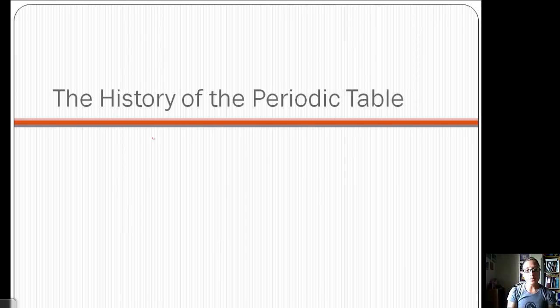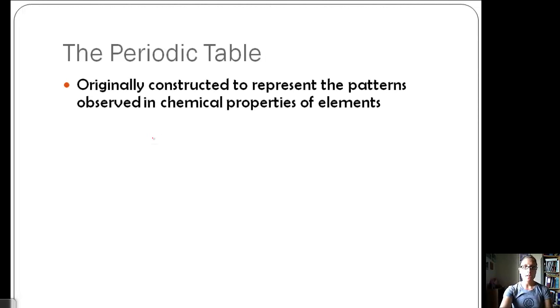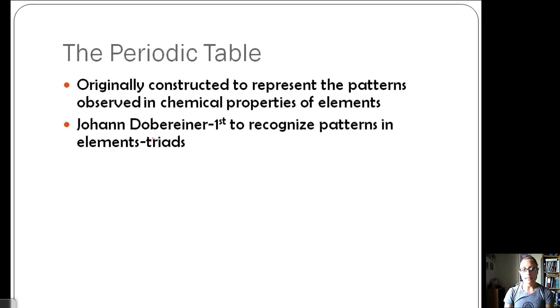Let's relate these quantum numbers to the periodic table and start talking about electron configuration. The periodic table was originally constructed to represent patterns of observing chemical properties of elements. We have kind of this timeline before we get to our current one. We had Johann Dabreiner. He was the first to recognize patterns and elements, and he called them triads because he was finding these groups of three that were similar.